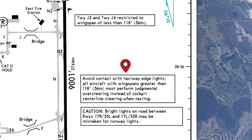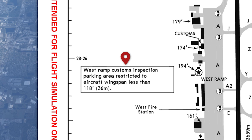These notes pertain to a specific area — they're placed within the area or tied to it. Let's take a look at the west ramp here: west ramp customs inspection parking area, restricted aircraft wingspan less than 118 feet. It's very interesting that they put less than 118 feet — the wingspan of a 737 700 series and 800 series is 117 feet.